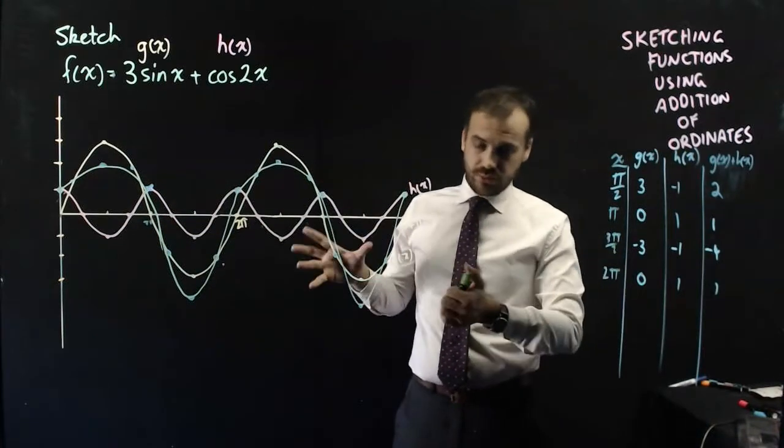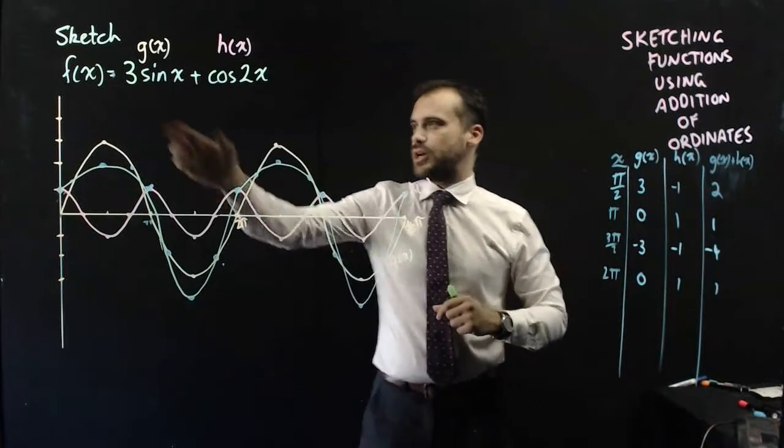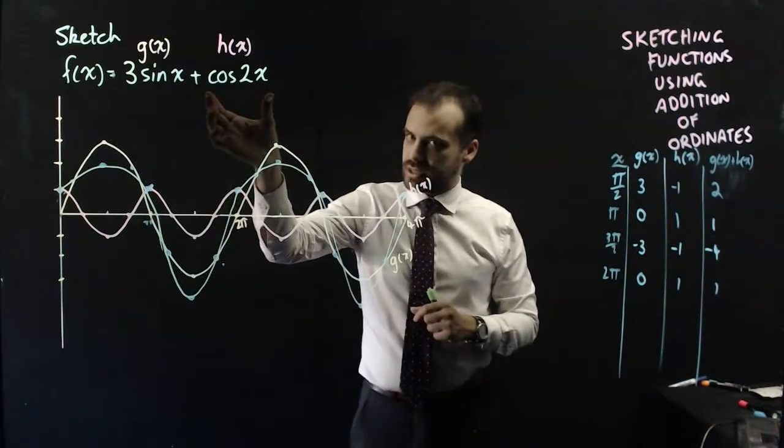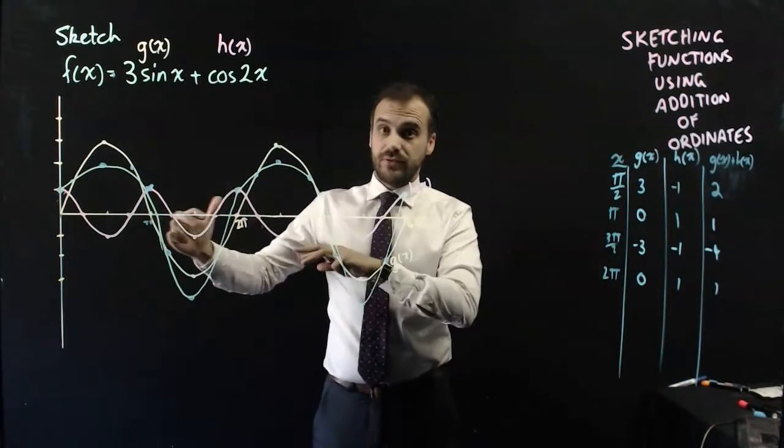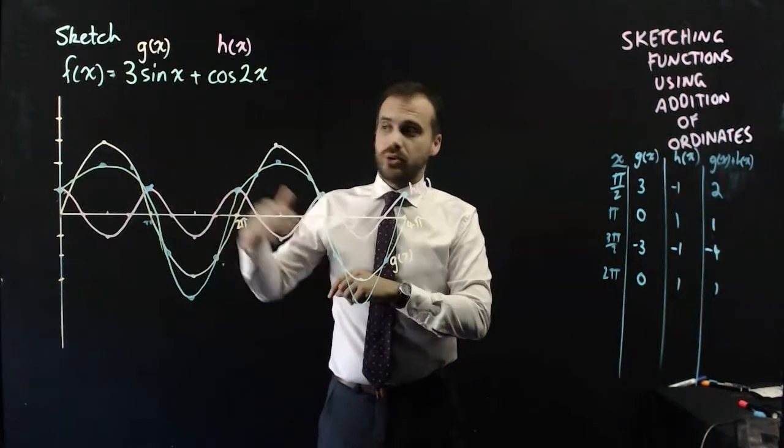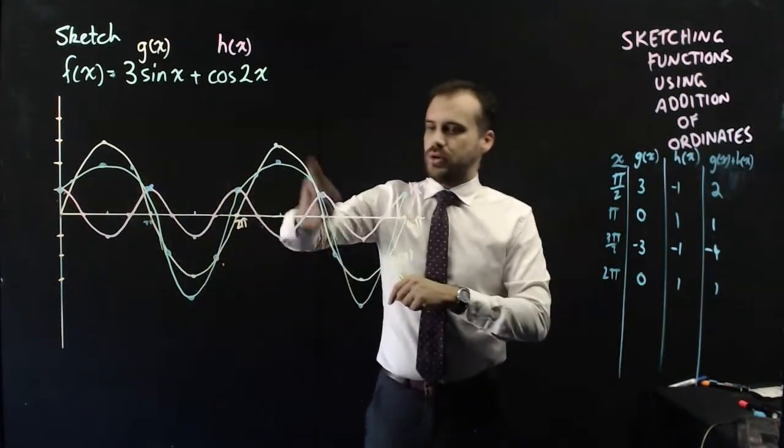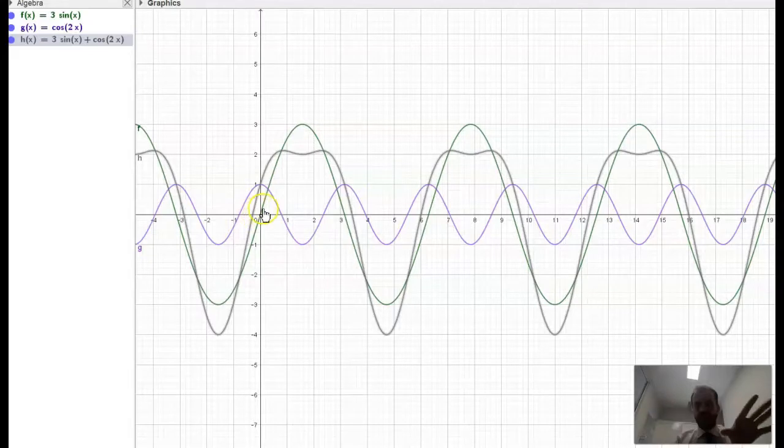Because I know this function, I know this function, and I can sketch both of those, and then I can add the ordinates to come up with my new function. So back at my desk, looking at it on Geogebra, I can see that my sketch is slightly out.